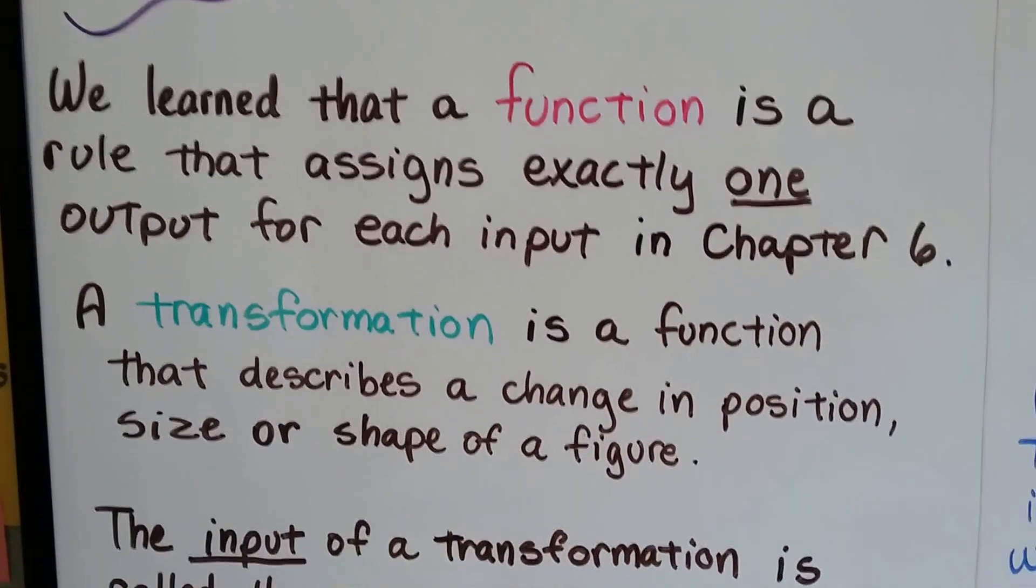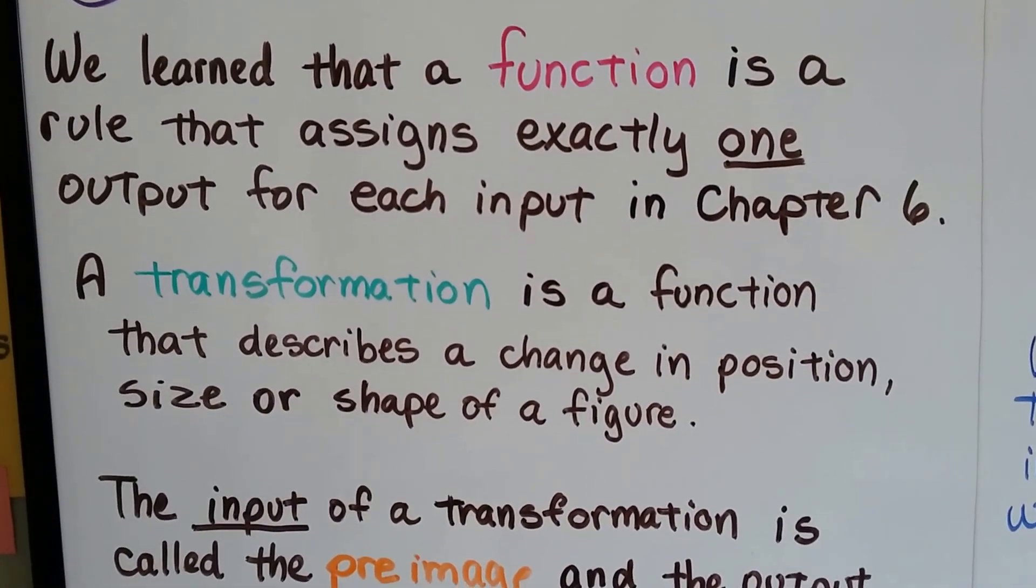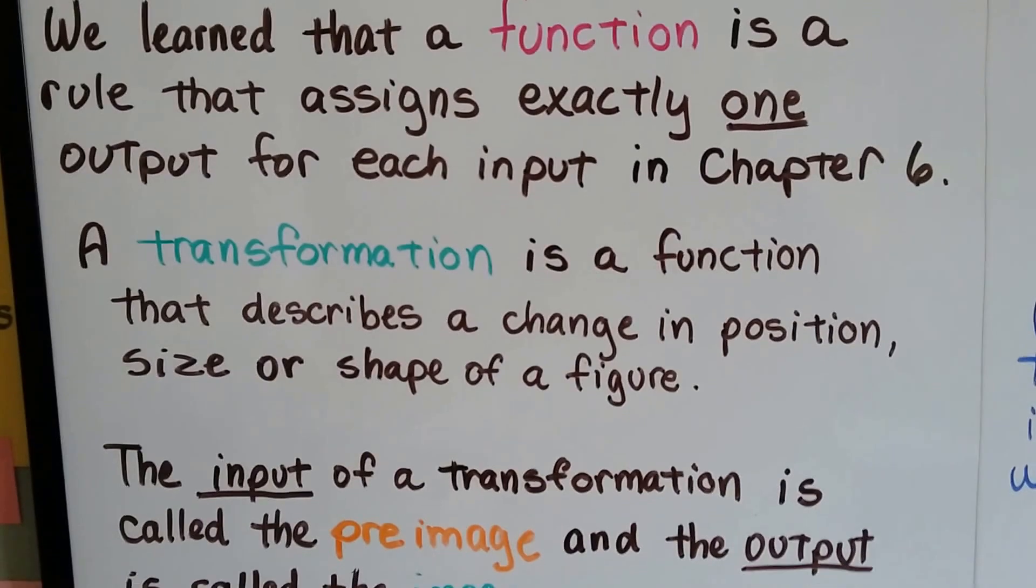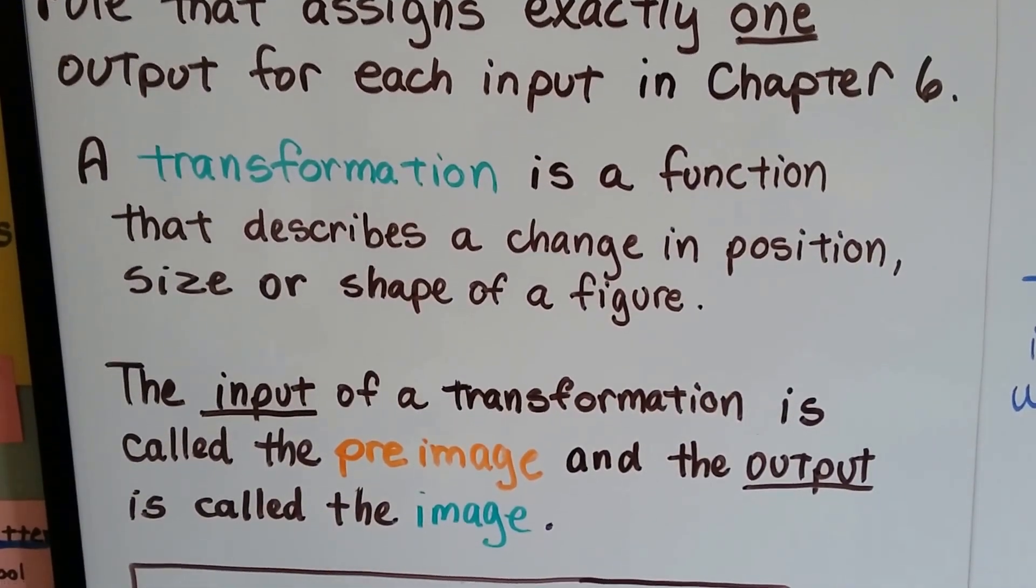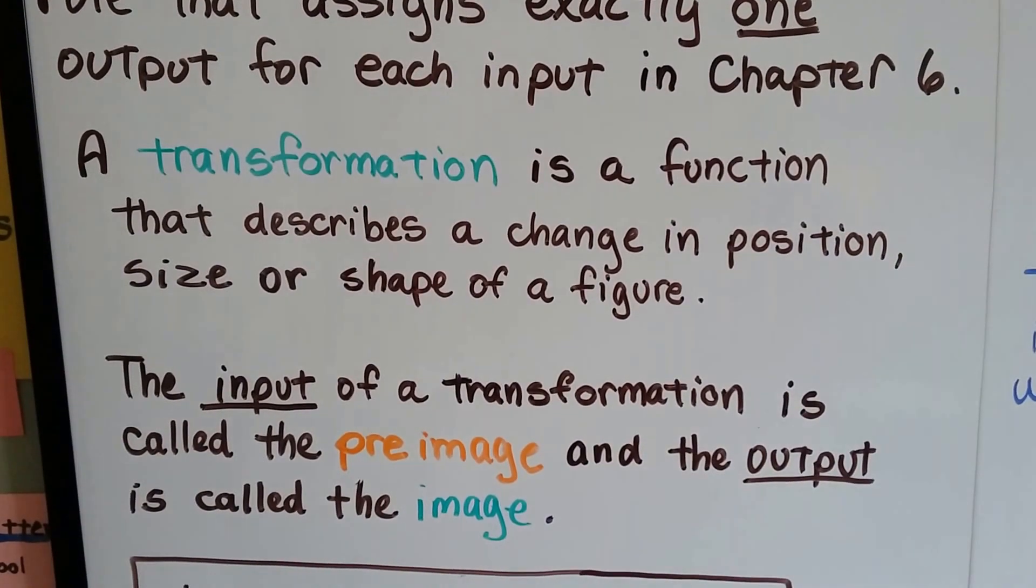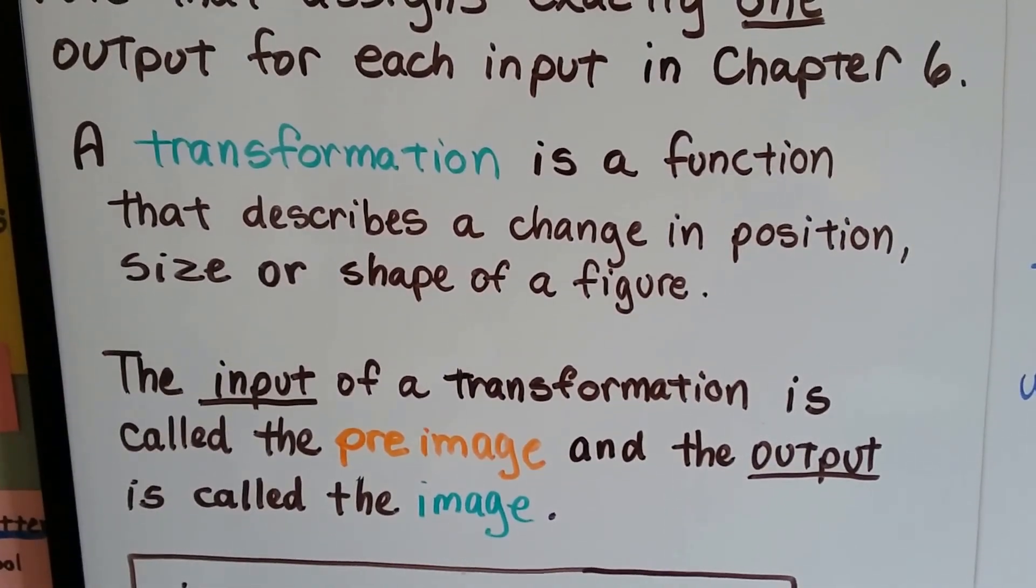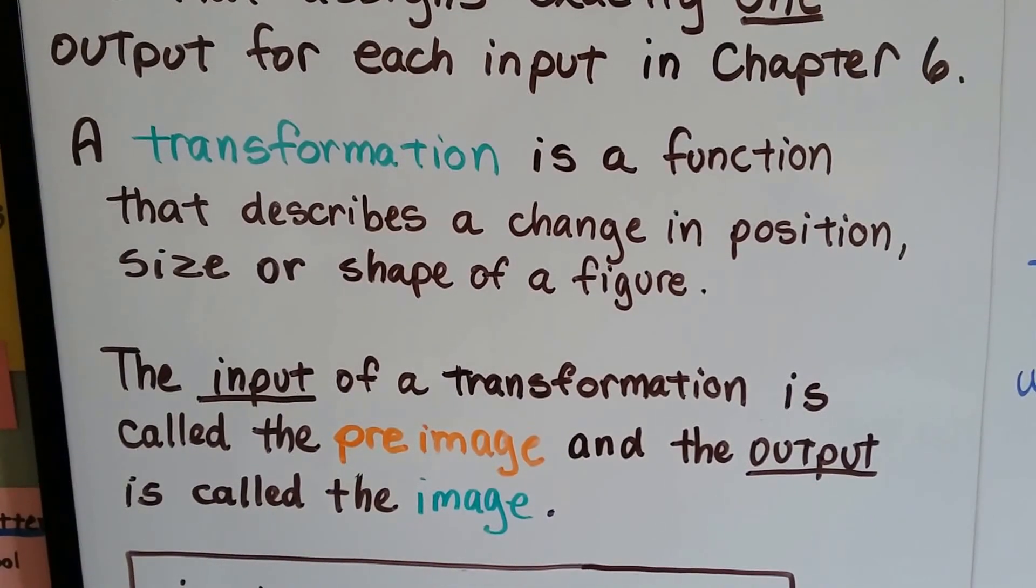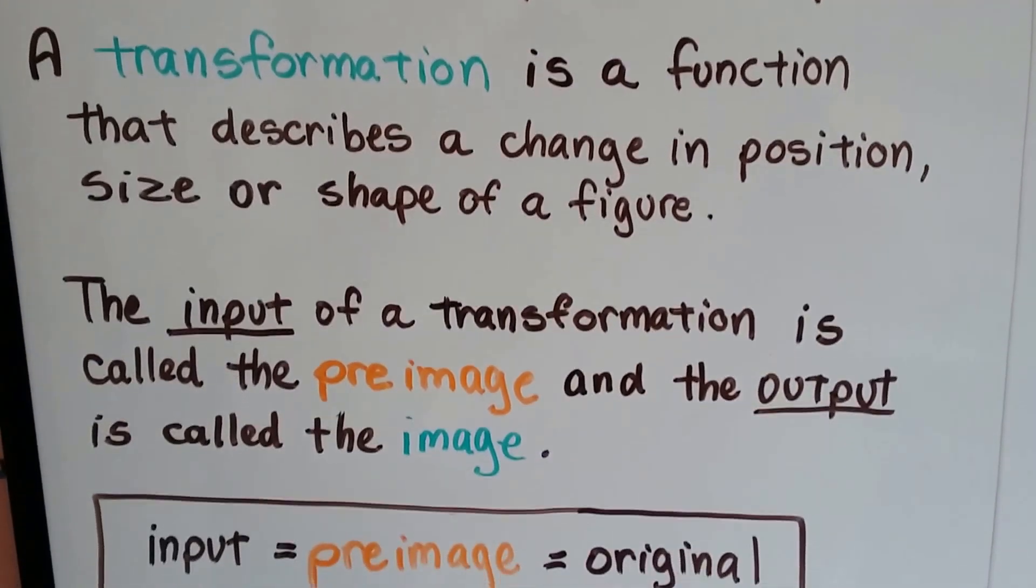We learned that a function is a rule that assigns exactly one output for each input in Chapter 6. A transformation is a function that describes a change in position, size, or shape of a figure. The transformation is a function that talks about the change in position, size, or shape of a figure.